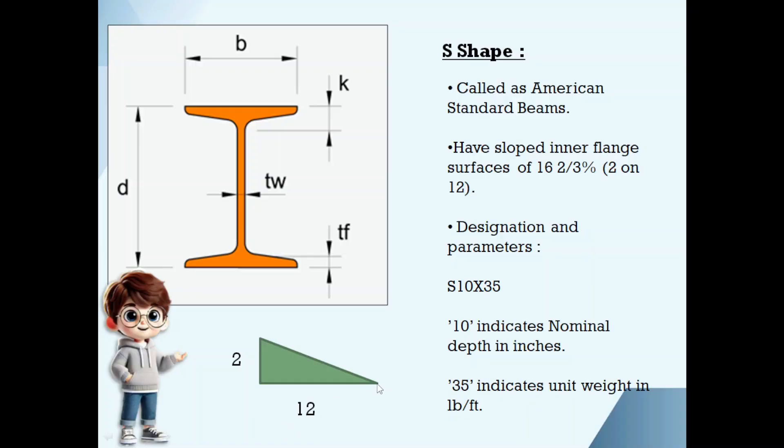I have already drawn here a triangle. For example, if you take this as the first position of a point, the point travels 12 inches horizontally and then 2 inches vertically. This will become second position of the point. If you draw a line matching first position and second position, the line will be in some slope. That slope we say it as 2 on 12. In the same slope, inner flange surfaces of S shape will also be. If you take S 10 by 35, 10 indicates nominal depth and 35 indicates unit weight.